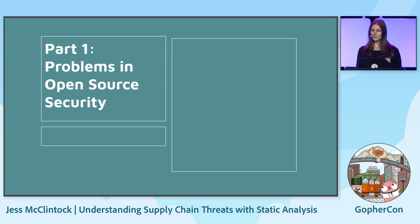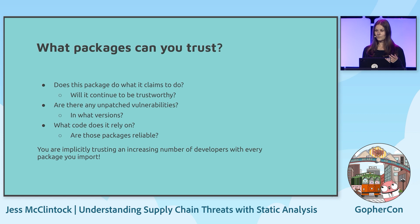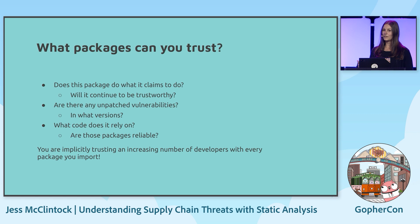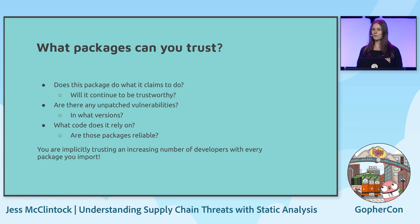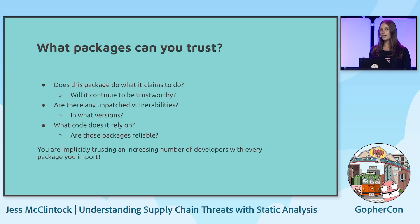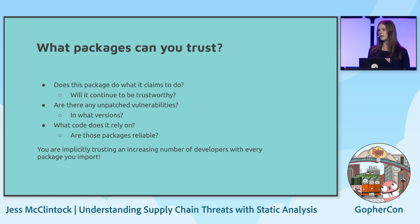Most problems in open source security are around trust. Trust in your dependencies is a transitive and ongoing relationship, which means that when you trust a package, you're also inherently trusting all of the dependencies of that package, and you're also trusting all future versions of that package. This is quite problematic because that's a lot of code and a lot of people you are trusting to not have any security issues, to not have any vulnerabilities, and to keep up to date with patches.